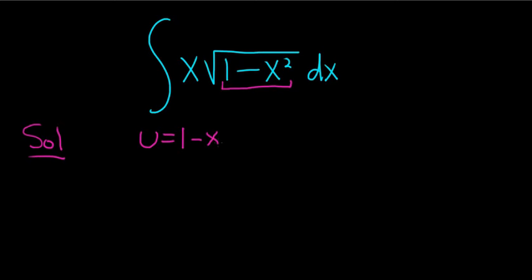So if we let u be equal to 1 minus x squared, then taking the derivative, we get du. And on the right-hand side, we use the power rule. So that would be negative 2x dx.